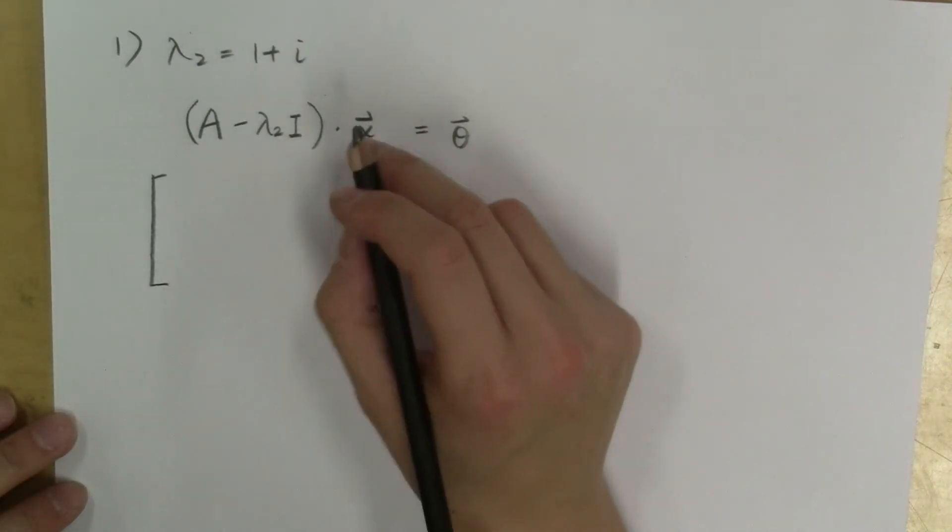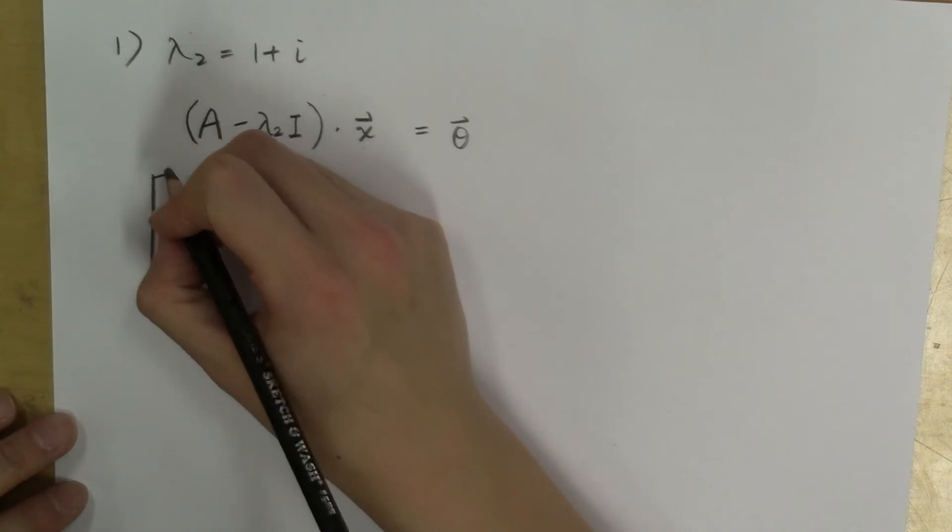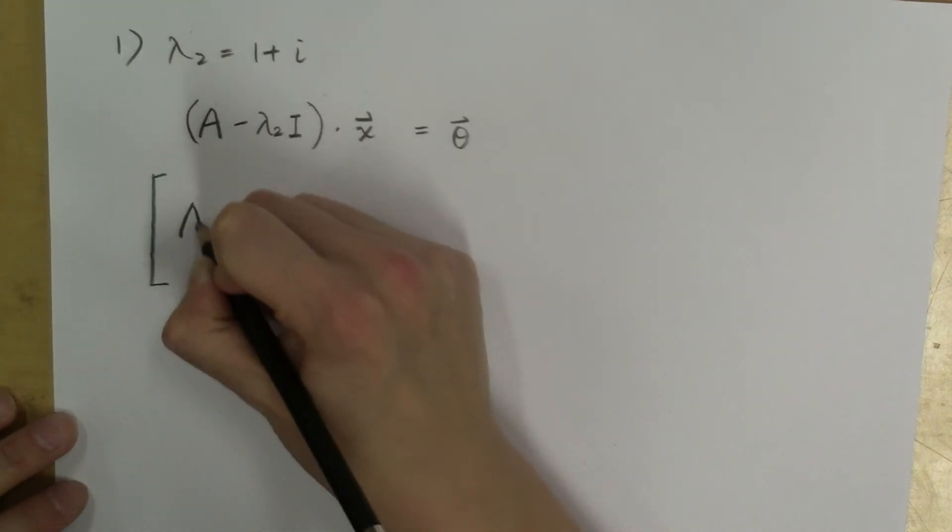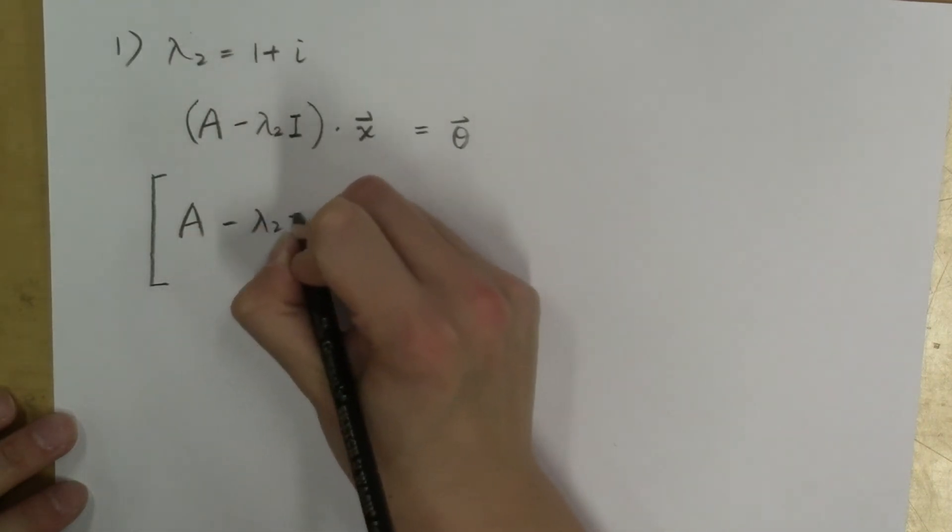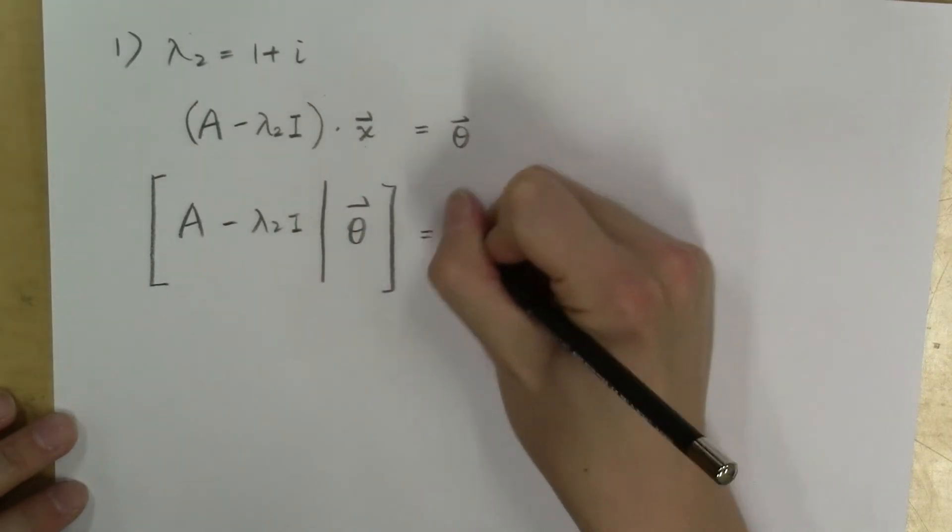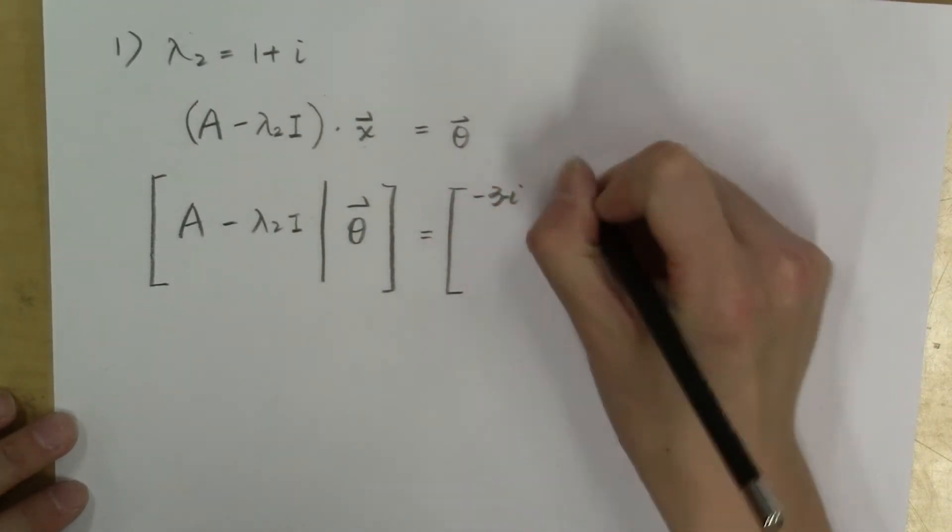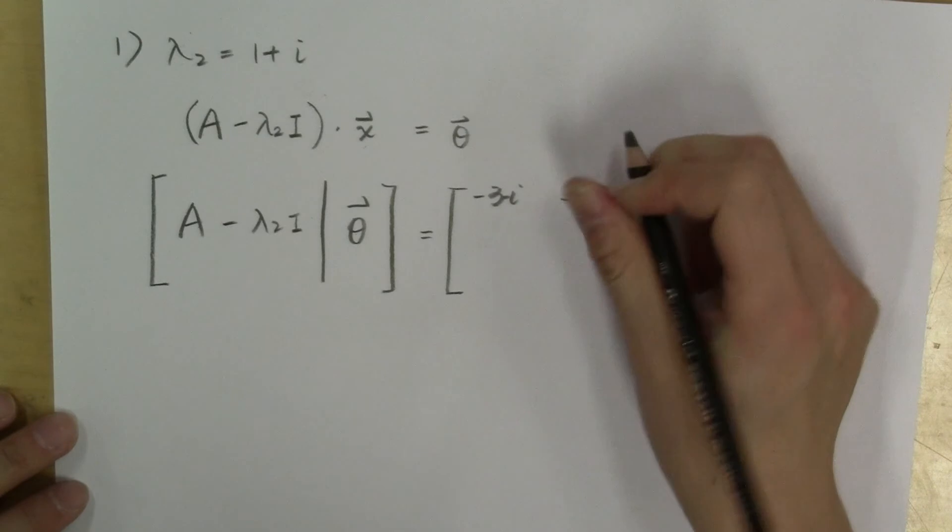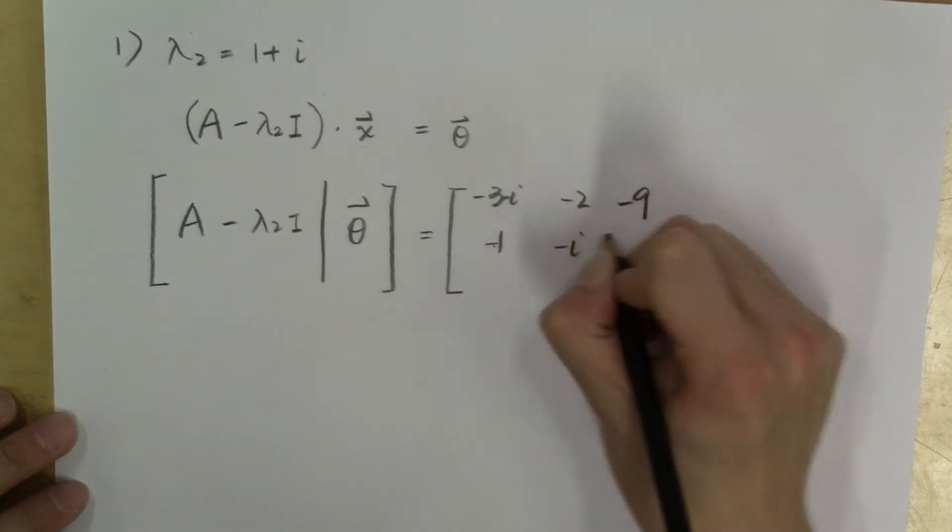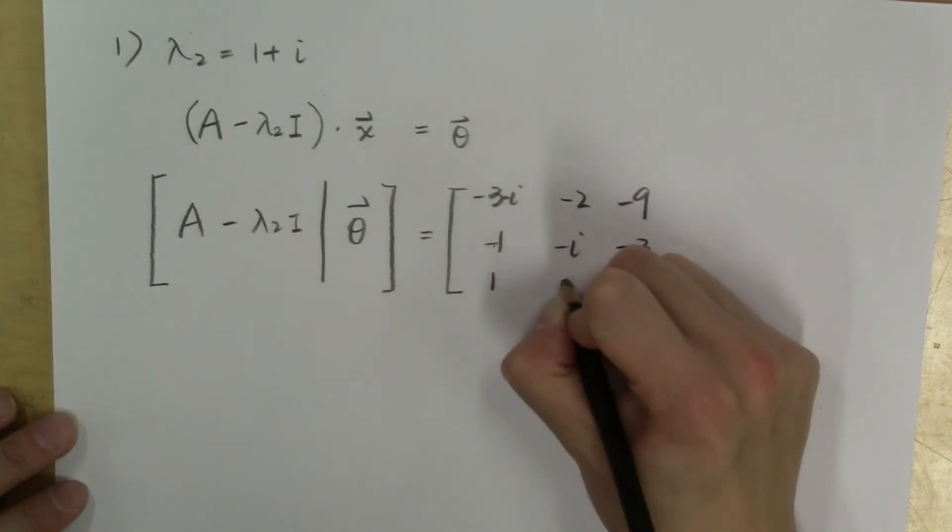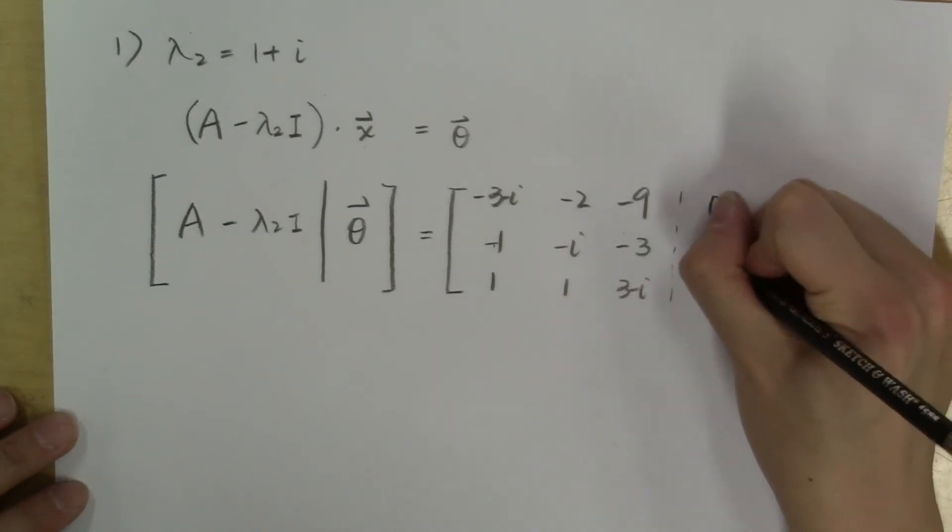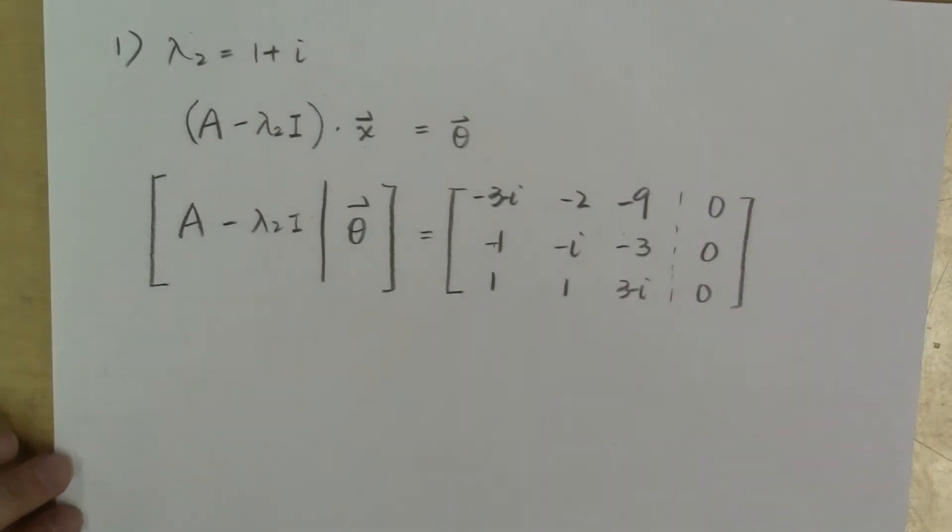And finding solutions to a linear system involves writing down the augmented matrix. In this case, A minus lambda sub 2 I, zero, which is: negative 3 minus i, negative 2, negative 9; negative 1, negative i, negative 3; 1, 1, 3 minus i; and the right-hand side vector being zero, zero, zero.